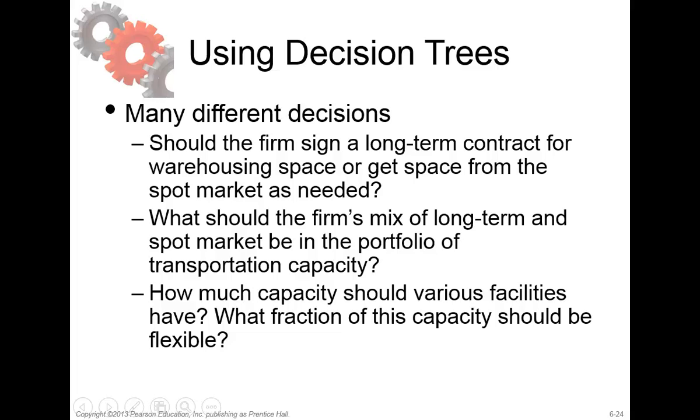We use decision trees for many different decisions made by the management of warehouses. One of those questions could be: should the firm sign a long-term contract for warehousing space or get space from the spot market as needed? The second one could be: what should the firm's mix of long-term and spot market be in the portfolio of transportation capacity? And the third possible decision that you could answer with decision trees is: how much capacity should various facilities have and what fraction of this capacity should be flexible?